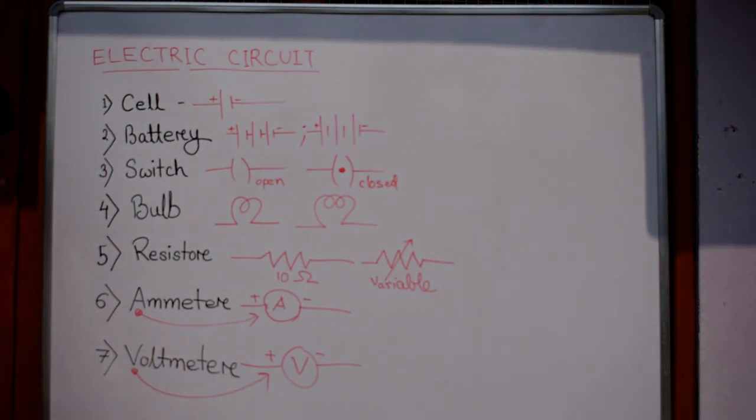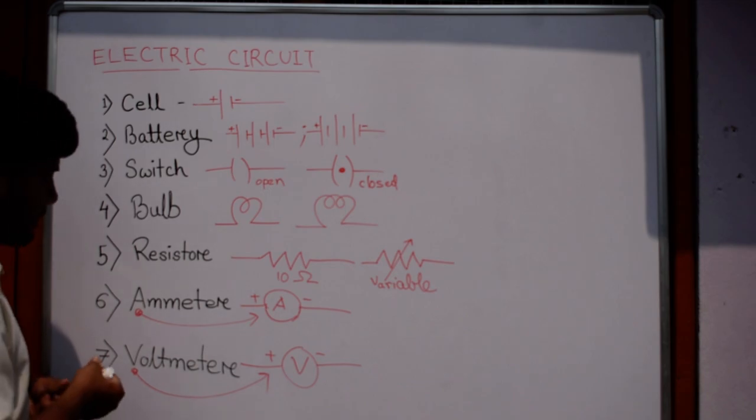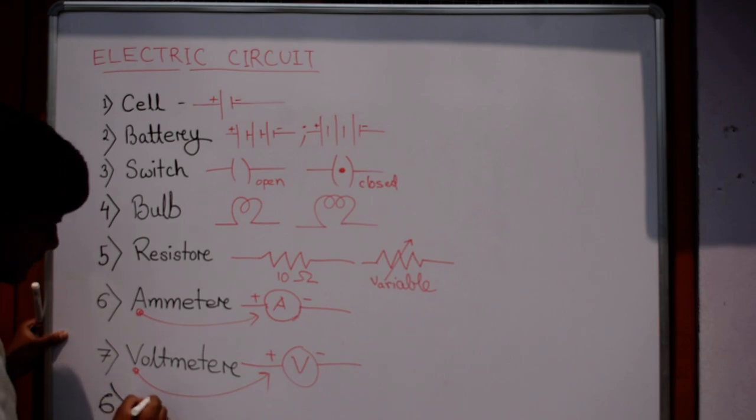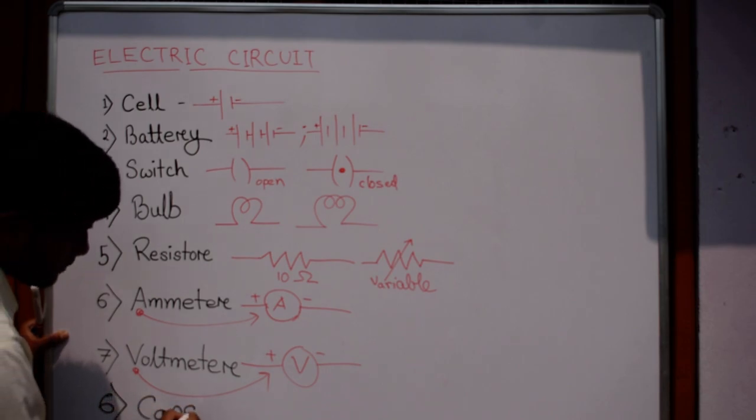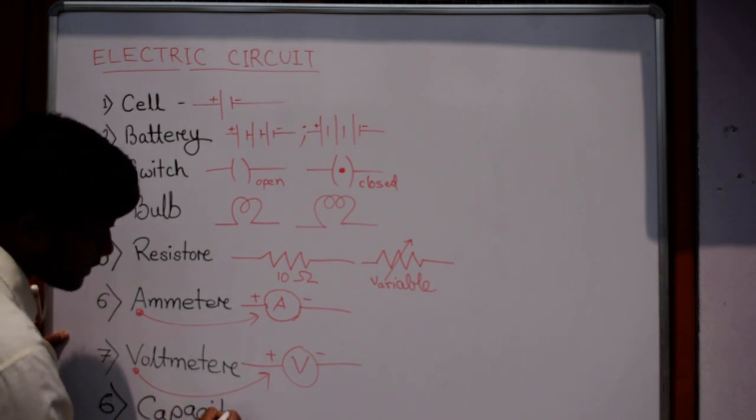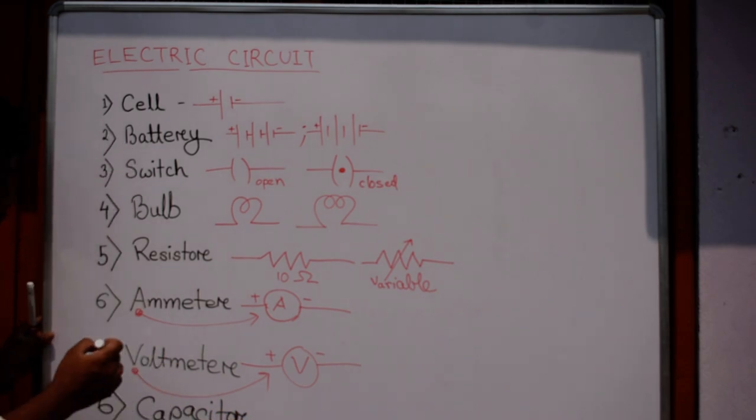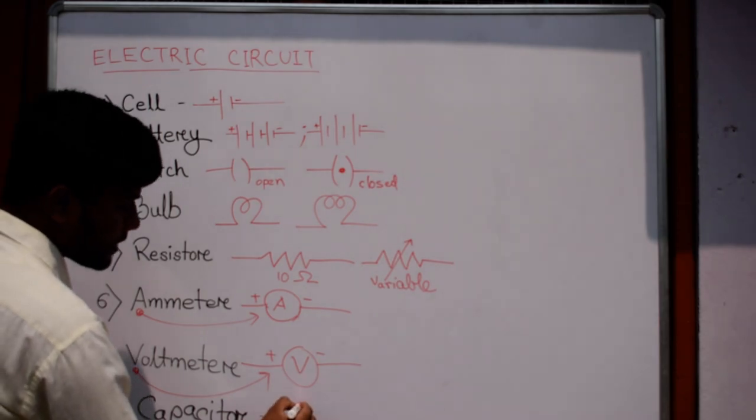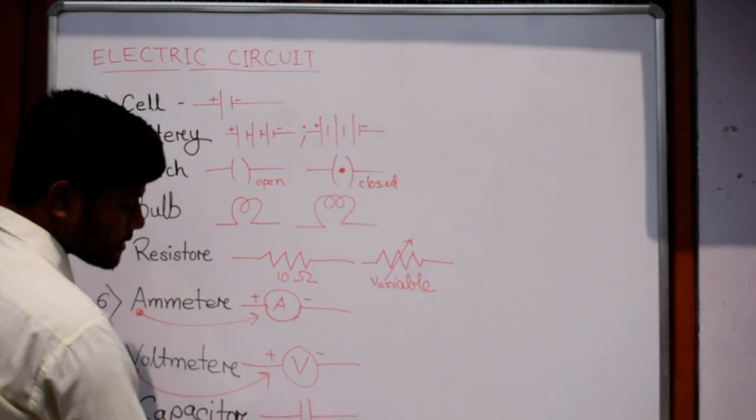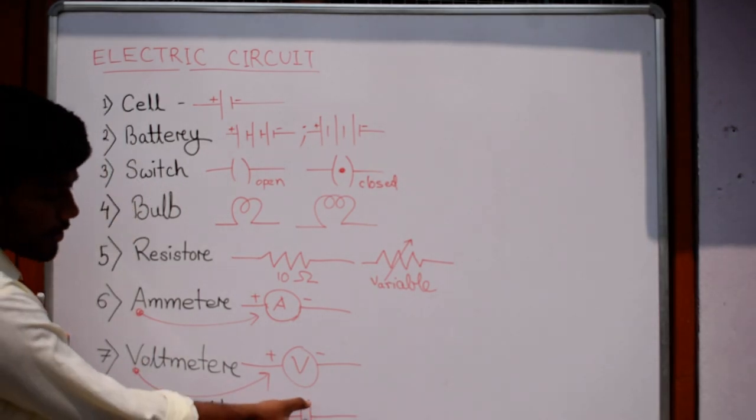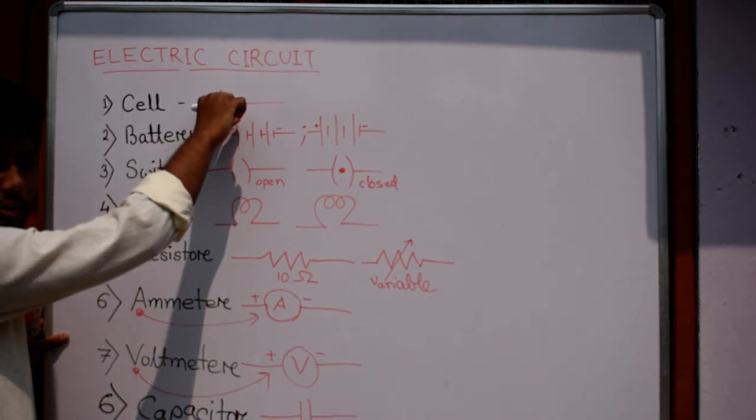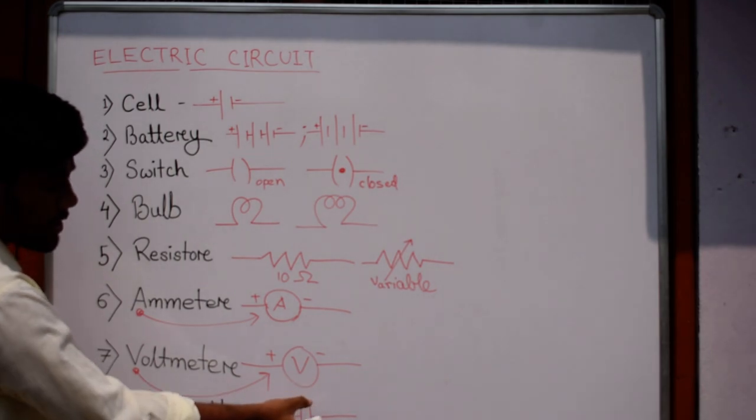One more thing is the capacitor. We denote the capacitor by this symbol. Both are equal size. In a cell one is long, other is short. Here both the sides are equal. We will discuss about capacitor later on.